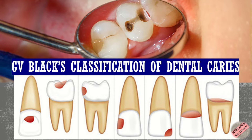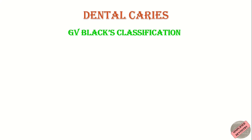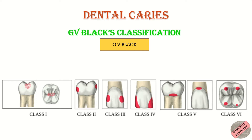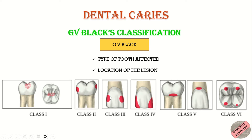Now let's move on to the GB Black's classification, which is based on the treatment and restoration design. This classification was developed by GB Black to categorize caries lesions based on the type of tooth affected, i.e. whether the affected tooth is anterior or posterior, and the location of the lesion — that is, the surface of the tooth involved.